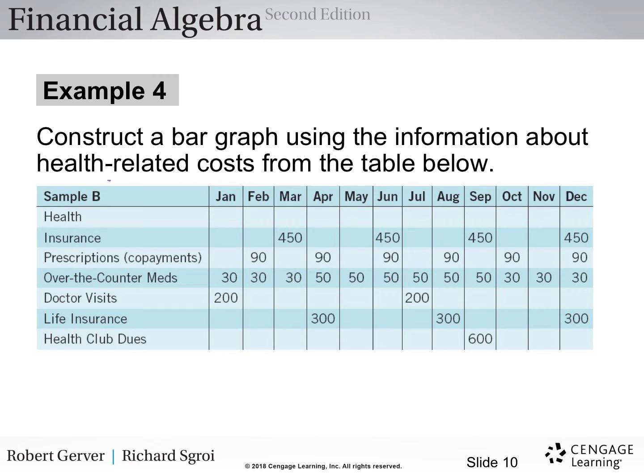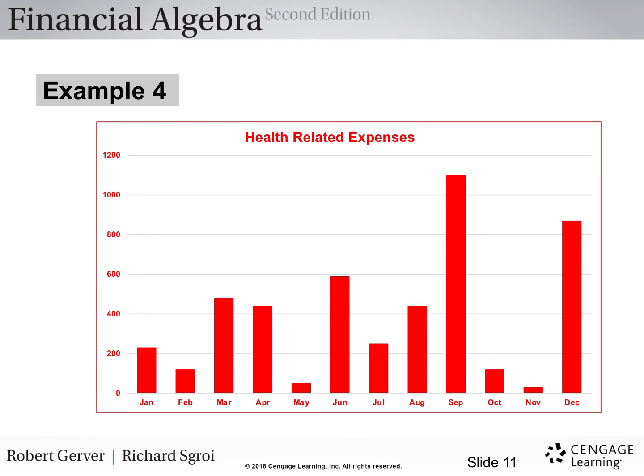Let's look at example four. Here they want us to construct a bar graph using the information about health-related cost from the table below. So we've got various categories on the left, and we've got the various months, January through December, and the amounts for each of those months. And they want us to create a bar graph. So all the categories were health-related. So this is going to be titled health-related expenses. And you notice on the left, anywhere from zero to 1200, and then the months, January through December, and the various heights of each of the bars indicates how much was spent on health-related expenses in each of the months.